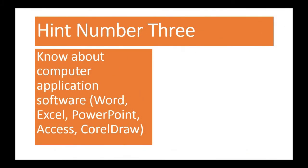Now let's move on to Hint number 3: know much about computer application software. The five software I'm showing on the screen are: word processing which is Microsoft Word, Microsoft Excel, Microsoft PowerPoint, Microsoft Access, and CorelDRAW. These are the five softwares we use in training students for their WASSCE examination, and you must know much about them. First, you need to have practical knowledge of the software, because if you can work on it practically, it will be easier to answer questions on it.